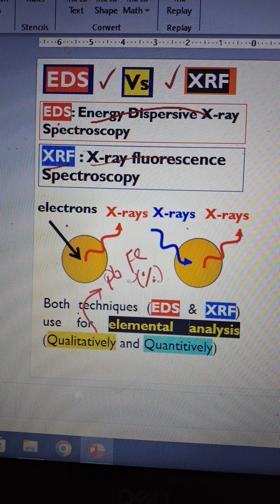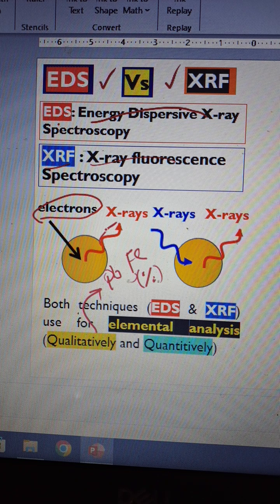In EDS, we use primary electrons to excite the atoms, and then secondary X-rays are produced. While in XRF, we use X-rays as the primary source to excite atoms.